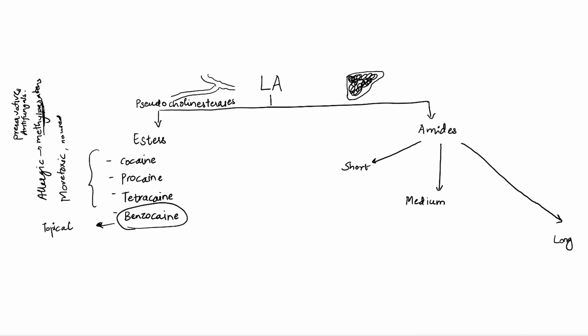Now let's remember it this way. The short-acting one, the example for that, articane. The medium-acting has lidocaine, has mepivacaine and has prilocaine. And the long-acting has bupivacaine.